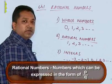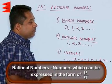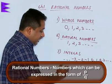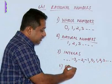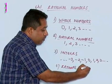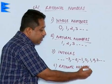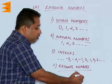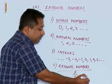Rational numbers are numbers which can be expressed in the form of P upon Q. What does P and Q represent? P and Q are numbers but Q should not be equal to 0.